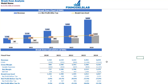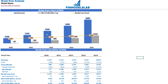On the break-even tab you can find the calculation of the revenue break-even level and a break-even chart. For this particular use case you may find that the revenue break-even level is less than actual revenue, which means the company is profitable.